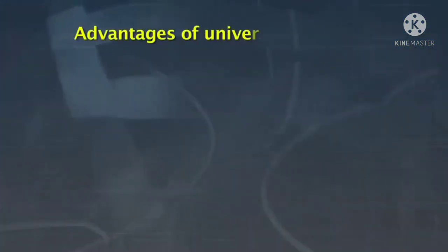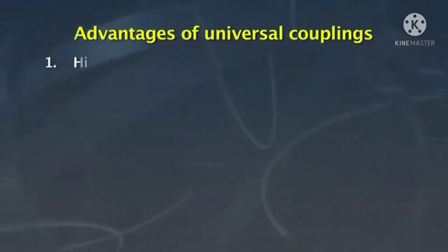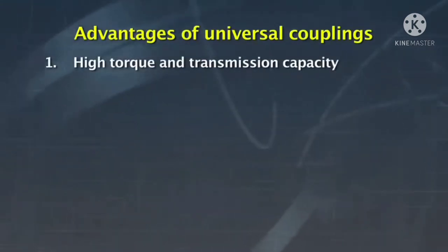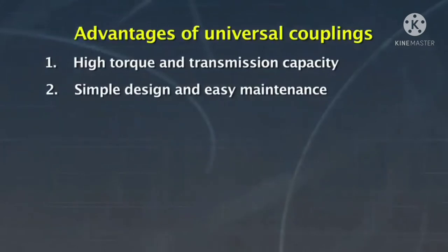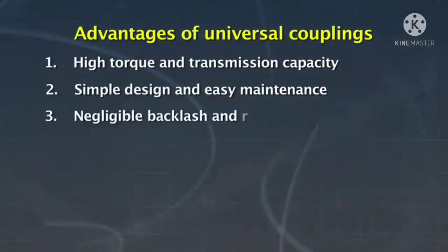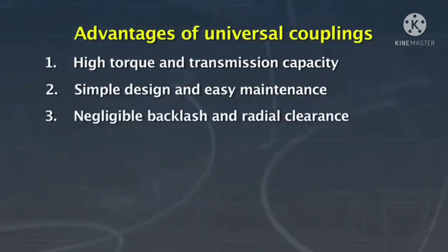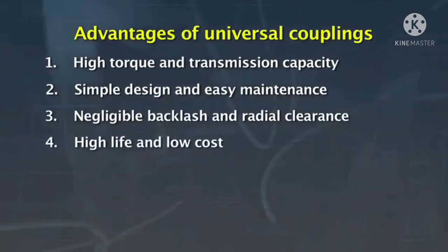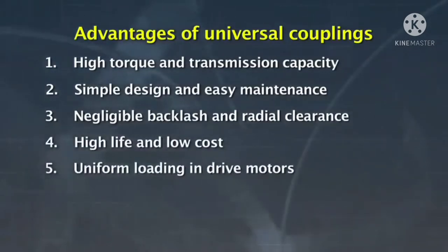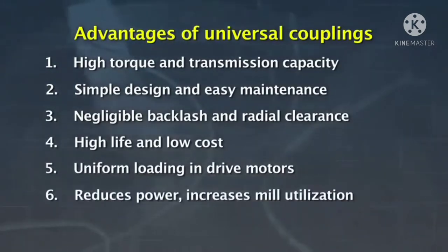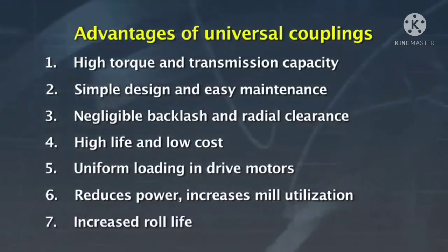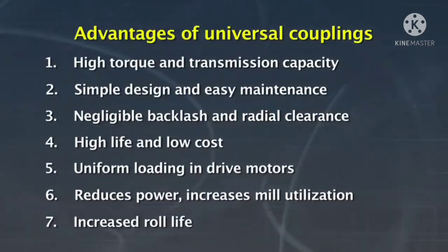The advantages of universal couplings are: they have high torque transmission capacity; their simplicity of design results in easy maintenance; they have negligible backlash and radial clearance; they have high operational life and low operational costs; they lead to uniform loading on drive motors, reduced power consumption and increased mill utilization; and they lead to increased roll life due to the higher flexibility of the spindle inclination.